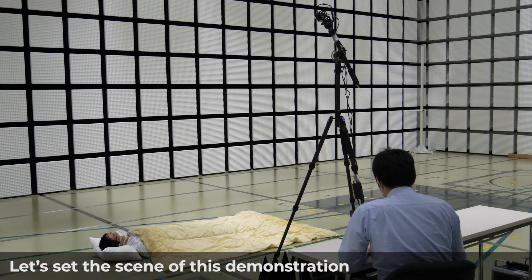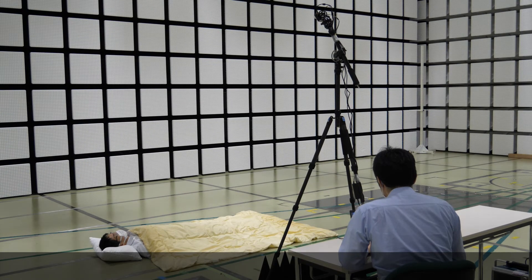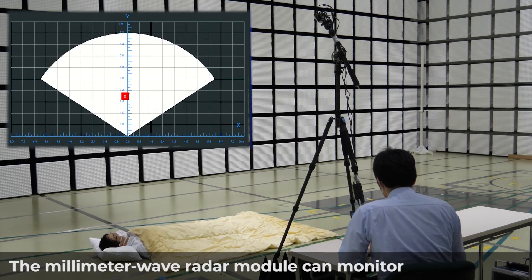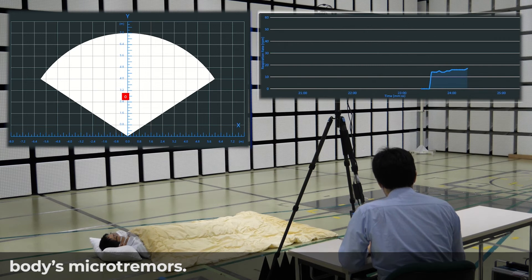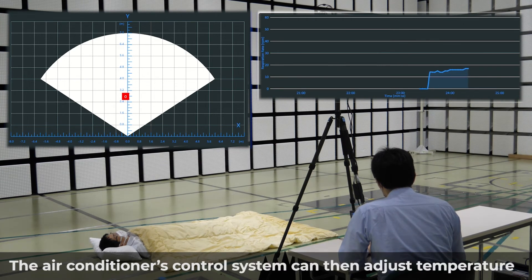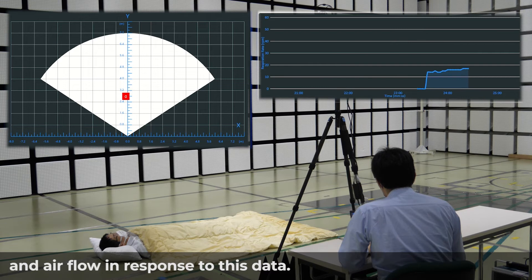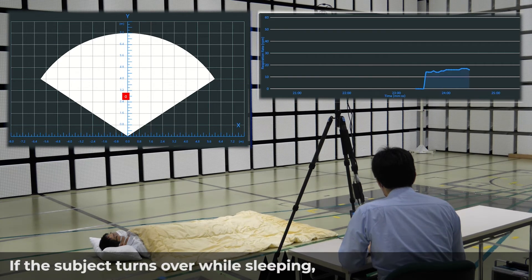Let's set the scene of this demonstration. The millimeter wave radar module can monitor the sleeping person's respiration by measuring their body's microtremors. The air conditioner's control system can then adjust temperature and airflow in response to this data.